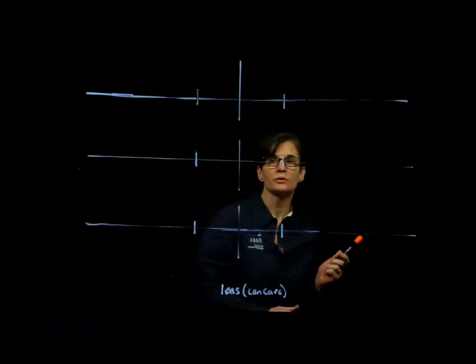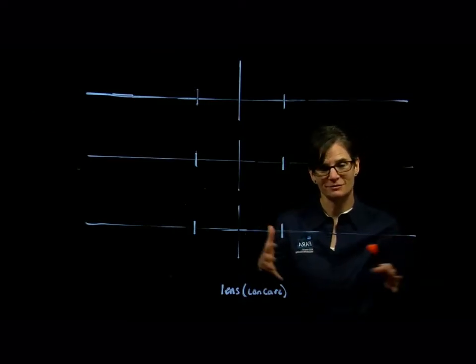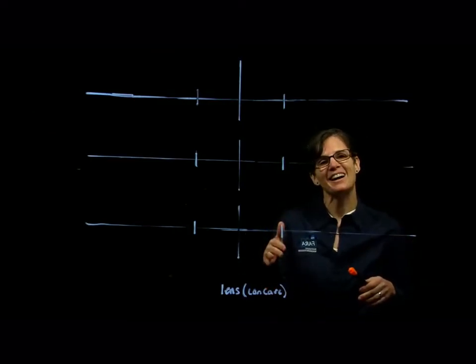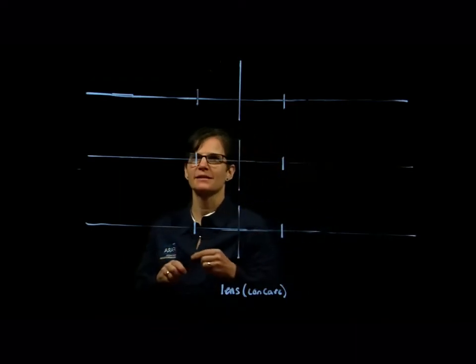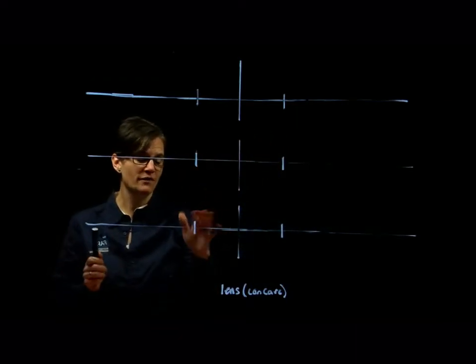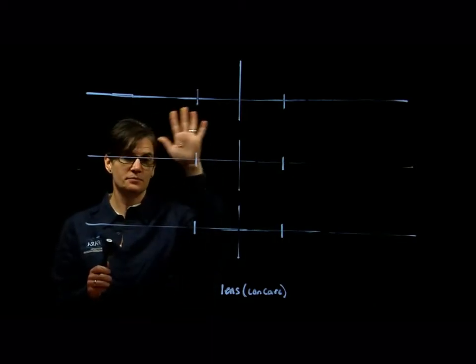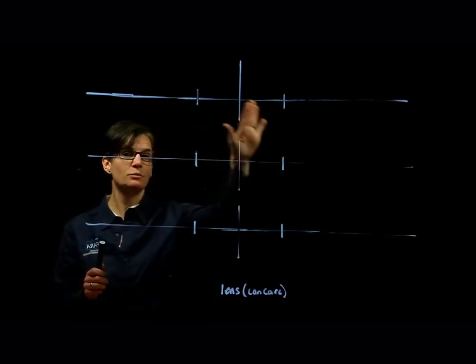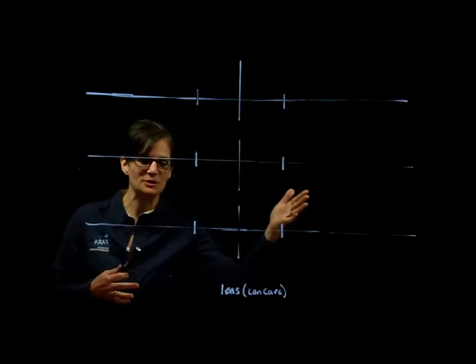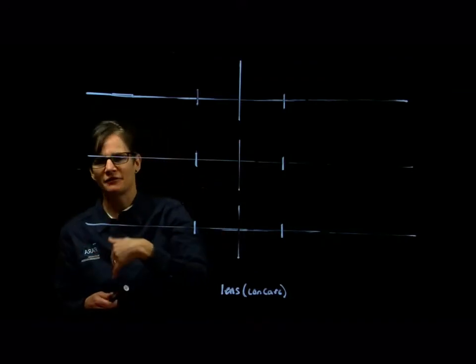This mini lecture is going to talk about image formation — a variety of image formations in a concave lens, so a diverging lens. On the board I've already represented our three-lens situation, and we're going to look at what happens when we take an object and look at the image through a concave lens as we move the object closer to and further away from the lens.